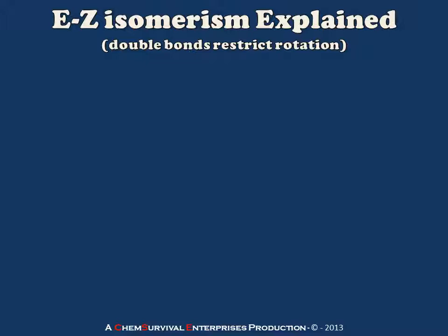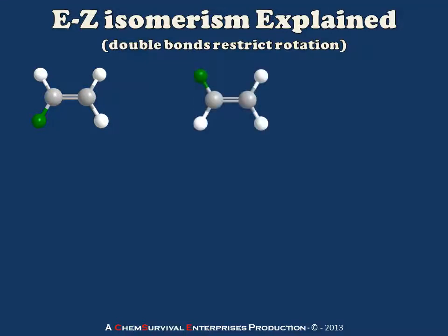Before we look at some things that actually have E-Z isomerism, I want to show you a few things that don't. First of all, let's take a simple alkene in which we have one unique substituent and three that are exactly the same, indicated here by the green and white spheres. Now I can draw what may at first glance look like a different isomer, but remember our rule: if I can rotate and translate these molecules to overlay them and make them appear identical, then they're not isomers — they're the same molecule.